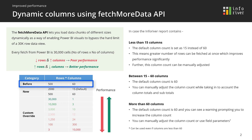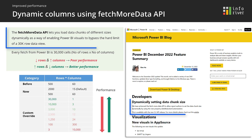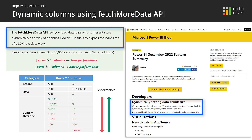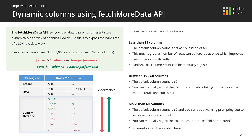In the past, InfoRiver had a hard-coded limit of 500 rows by 60 columns for every fetch, which limited the ability to support beyond 60 columns. With the recent Fetch More API algorithm enhancement released by Microsoft, InfoRiver version 1.9 and onwards will let you manually adjust the column count, and the engine will automatically adjust the number of rows for each fetch up to the 30,000 cell limit.